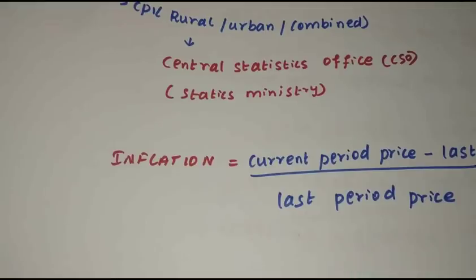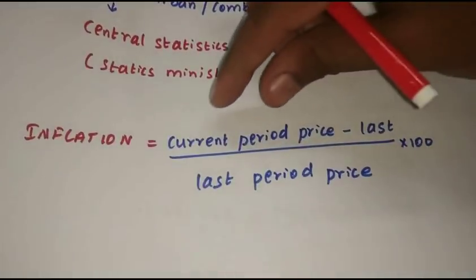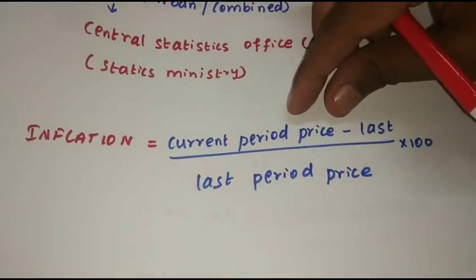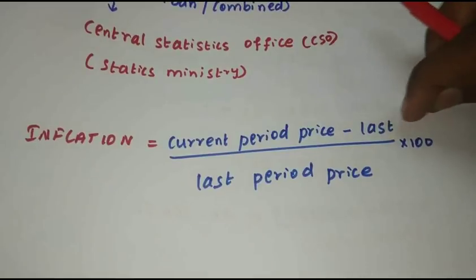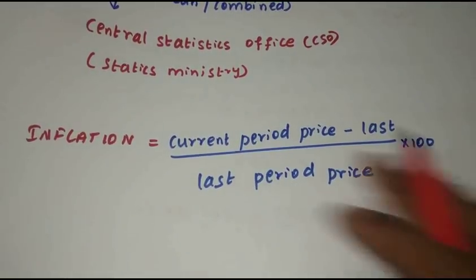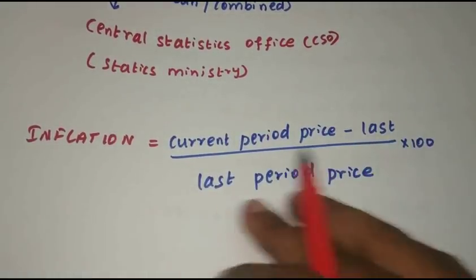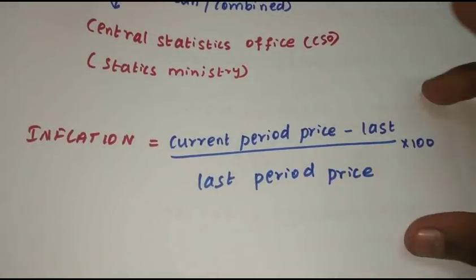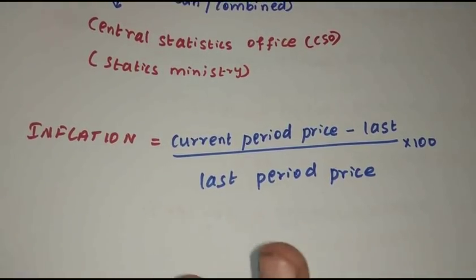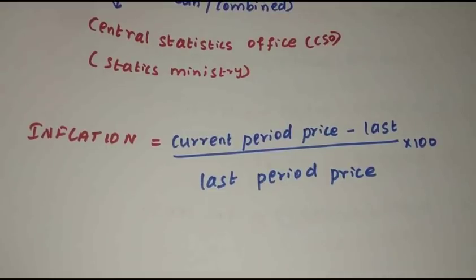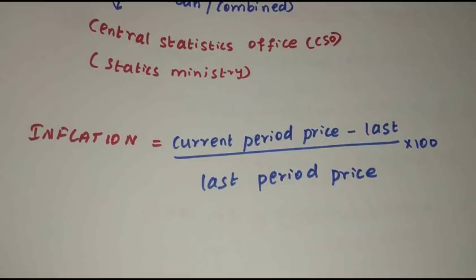Inflation has a basic formula: current period price minus last period price, divided by last period price, multiplied by 100. If you have exam points, this formula is enough. If you have an economic price scenario, this is sufficient.